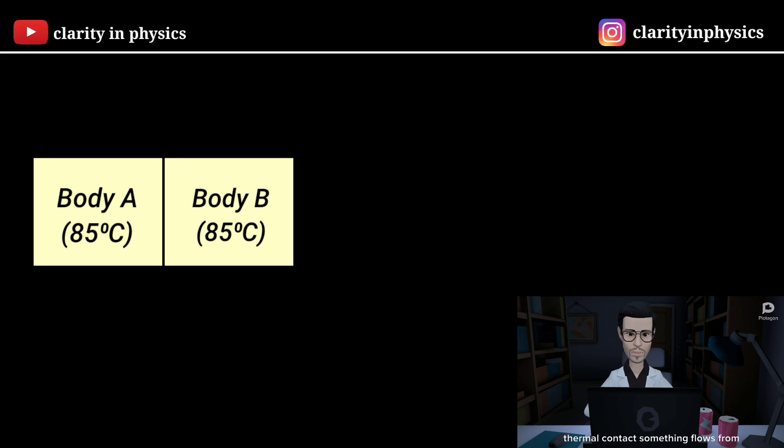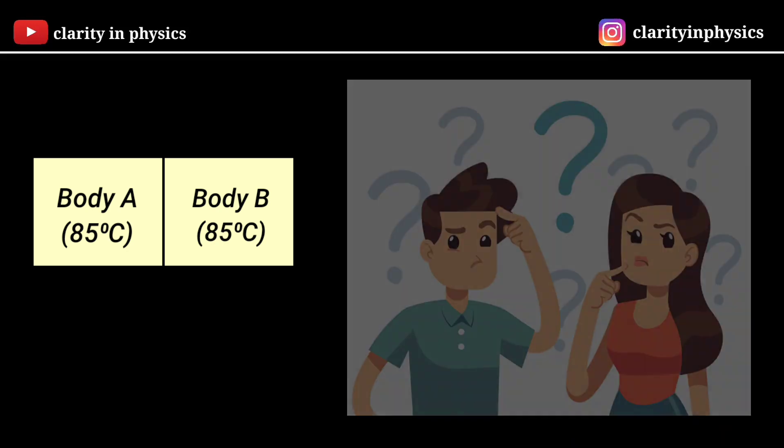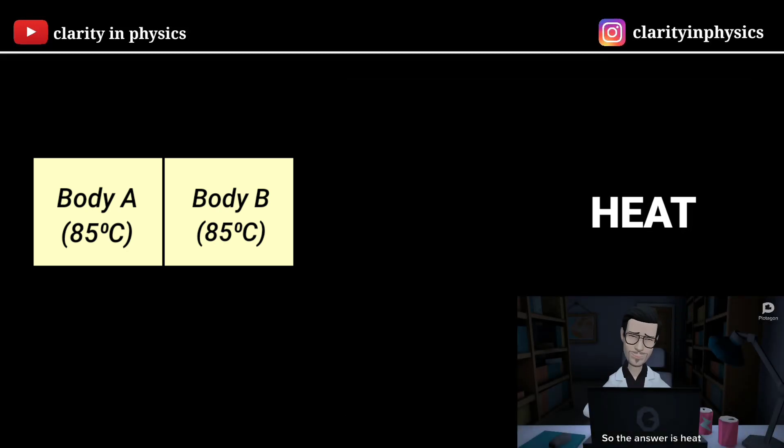When two bodies are placed in thermal contact something flows from the body at higher temperature to the one at lower temperature. What does flow here? The answer is heat. Heat flows from the body at high temperature to the one at lower temperature.